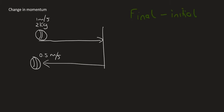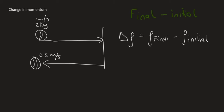Here we're going to do the same type of question and work out the change in momentum, but I'm going to show you a better way to do it. We know that the delta symbol stands for change, and the change in momentum is always equal to the final momentum minus the initial. When you use this formula, you must choose a direction — I'm going to choose to the right as positive.